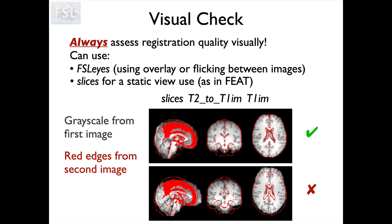When registration is not aligned well, it's very obvious — you don't need to be any expert to see that it hasn't worked, because the red edge clearly doesn't match the edge of the grayscale image, particularly at the front of the brain in the axial view and also clearly in the sagittal. It's less obvious in the coronal, which is something to keep in mind. It's really good to always look at all three orthogonal slices, because sometimes one won't be very obvious.